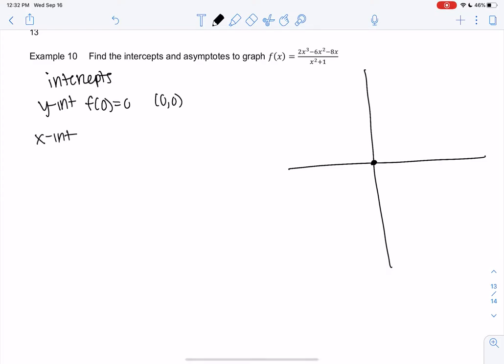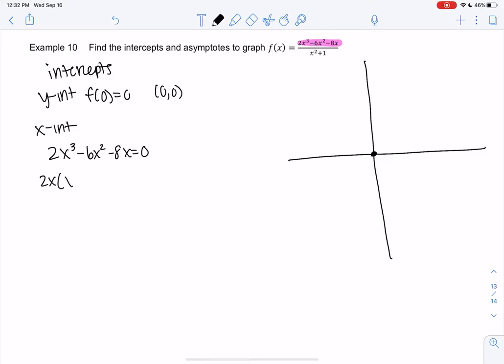My x-intercepts are when the numerator is 0 because those are in the domain. I can factor out a 2 and an x and we get x² minus 3x minus 4. Which I don't think does that factor. Yeah, it would be minus 4 and plus 1. Right, that'll multiply to make negative 4, add to negative 3. So we have a bunch. We have 0, 4, and negative 1. So we have 3 intercepts.